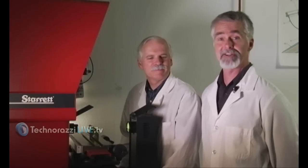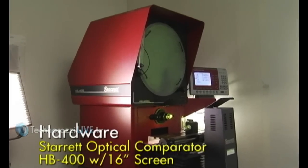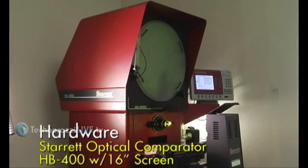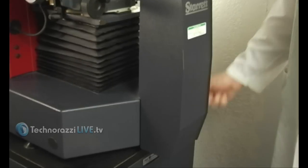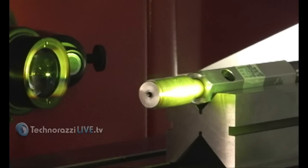Today we're going to talk about profile projectors or optical comparators or shadow graphs. These machines have been around since the 1940s. This particular model is a Starrett HB400, very sturdy comparator with a 16 inch screen. The stage has quite a bit of movement. You can rapidly move it.